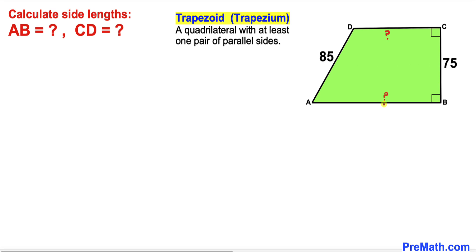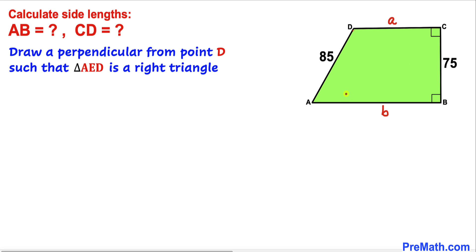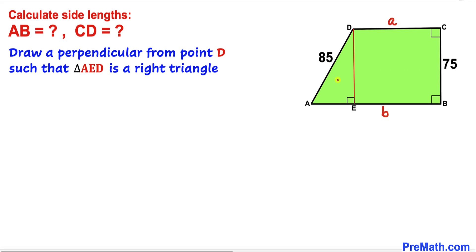First, let's label the unknown side lengths. I'll call side length CD as lowercase a, and side length AB as lowercase b. Next, let's draw a perpendicular from point D onto side length AB.